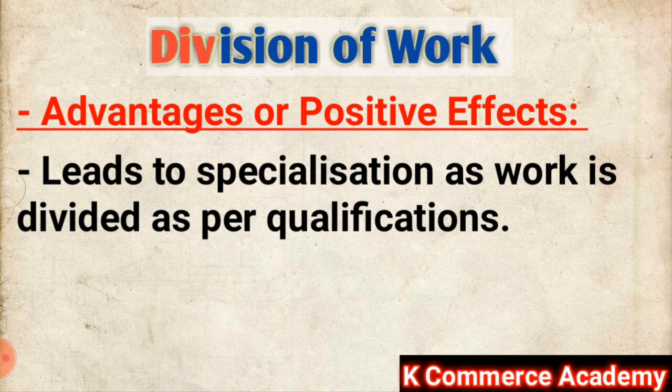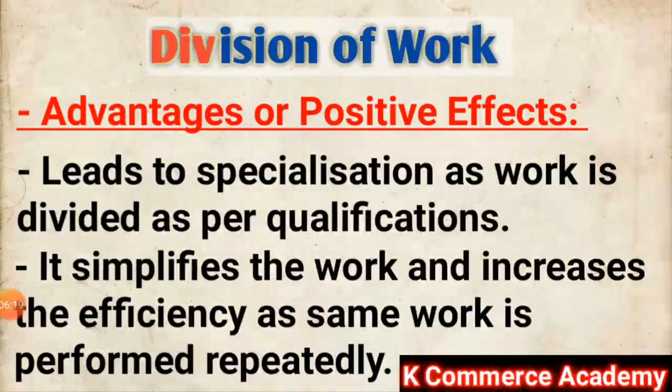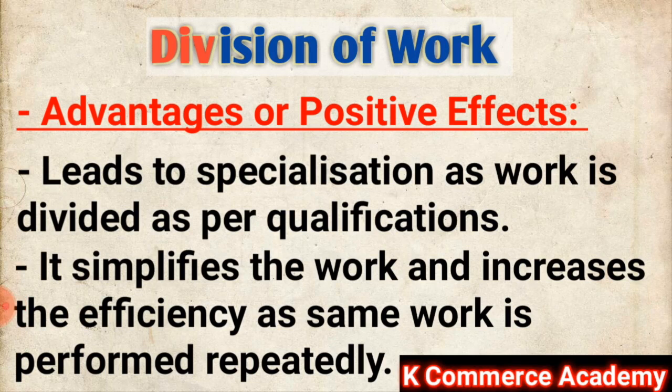Work is allocated on the basis of the person's interest and qualifications. For example, if you want to appoint a manager in the Accounts Department, obviously you will choose a CA. But if you want to appoint a manager in the Production Department, we will choose differently — so that difference exists. This is the first positive effect of Division of Work.